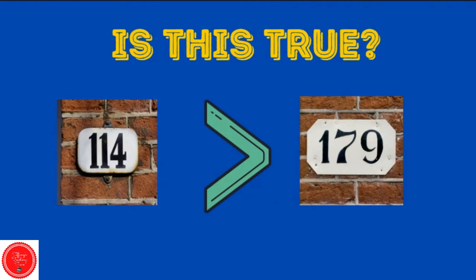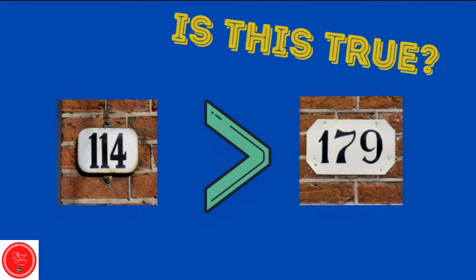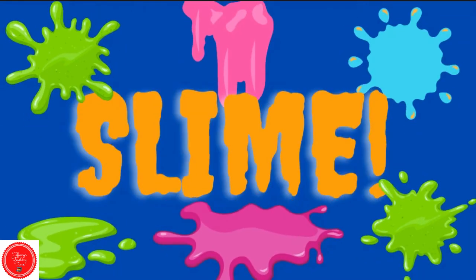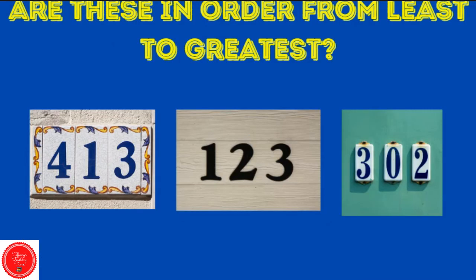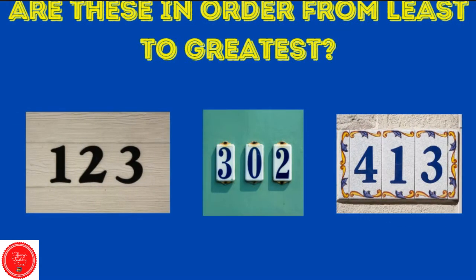Is this true? 114 is greater than 179. No, it is not. We have to go to the tens place for this one — 7 is bigger than 1, so 179 is the greatest. Are these numbers in order from least to greatest? No, they are not. Are these numbers in order from least to greatest? Yes, they are.